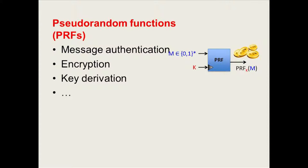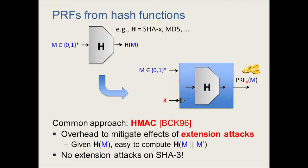This talk is going to be about pseudorandom functions. Pseudorandom functions are central concepts in symmetric cryptography and well beyond. They are used for numerous applications: as message authentication codes, for symmetric encryption, for key derivation, and so on. I'm going to focus on hash functions that are obtained by appropriately keying a hash function by inserting a secret key into the computation so that what we get is a good pseudorandom function. The most widely used construction doing this is HMAC.